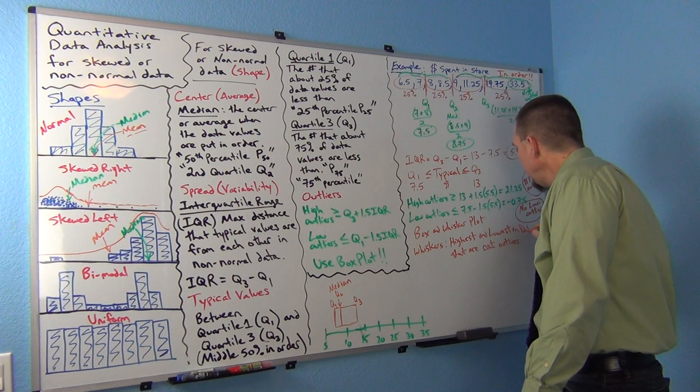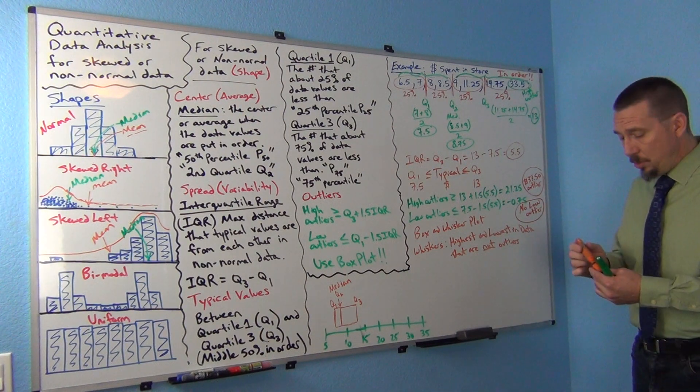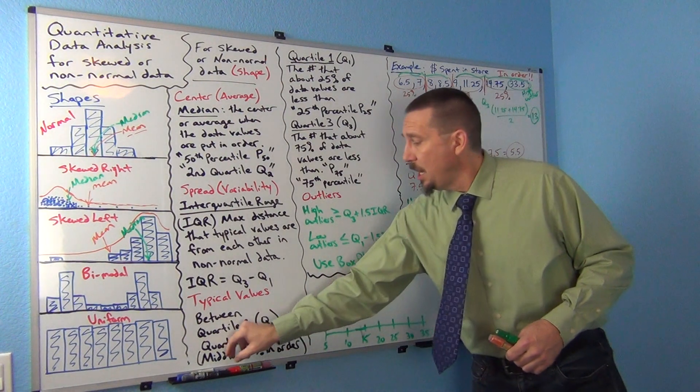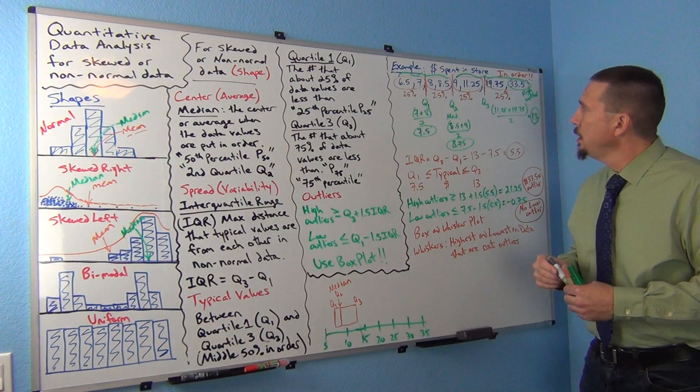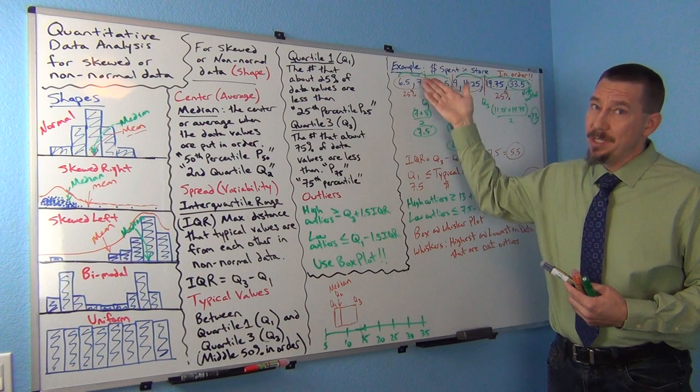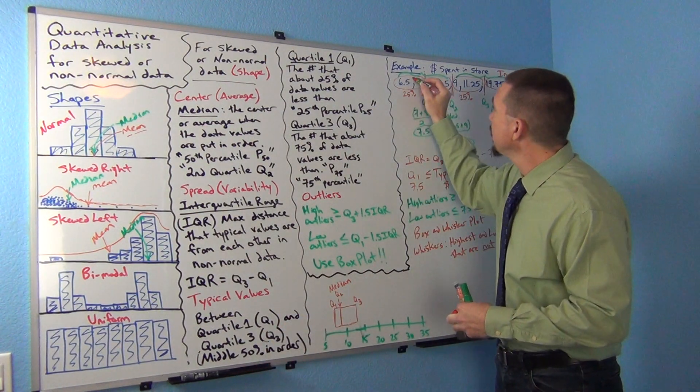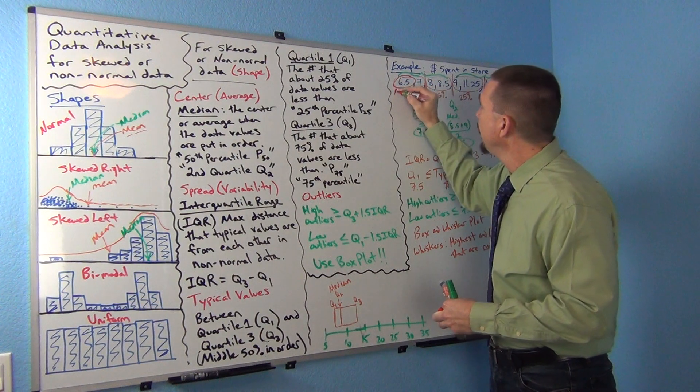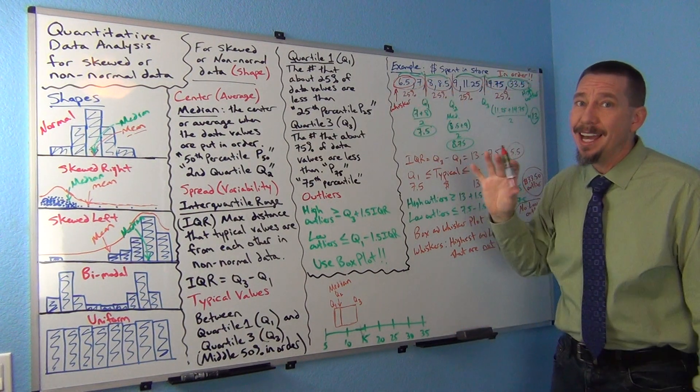So the whiskers go to the highest and lowest values in the data set that are not outliers. So they have to be numbers in the data that are not outliers. So if I was looking at this, I might say, okay, well, the lowest number in the data is 6.5 and that was not an outlier. So the bottom whisker has got to go to 6.5. So a whisker always goes to a number that's not an outlier, though.